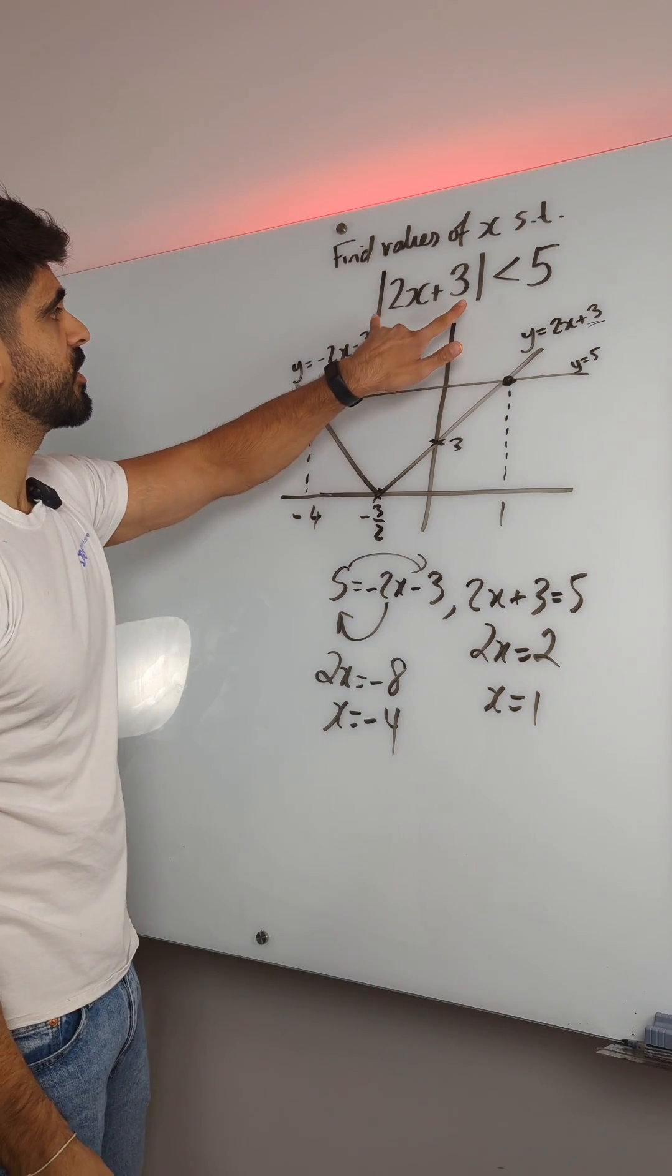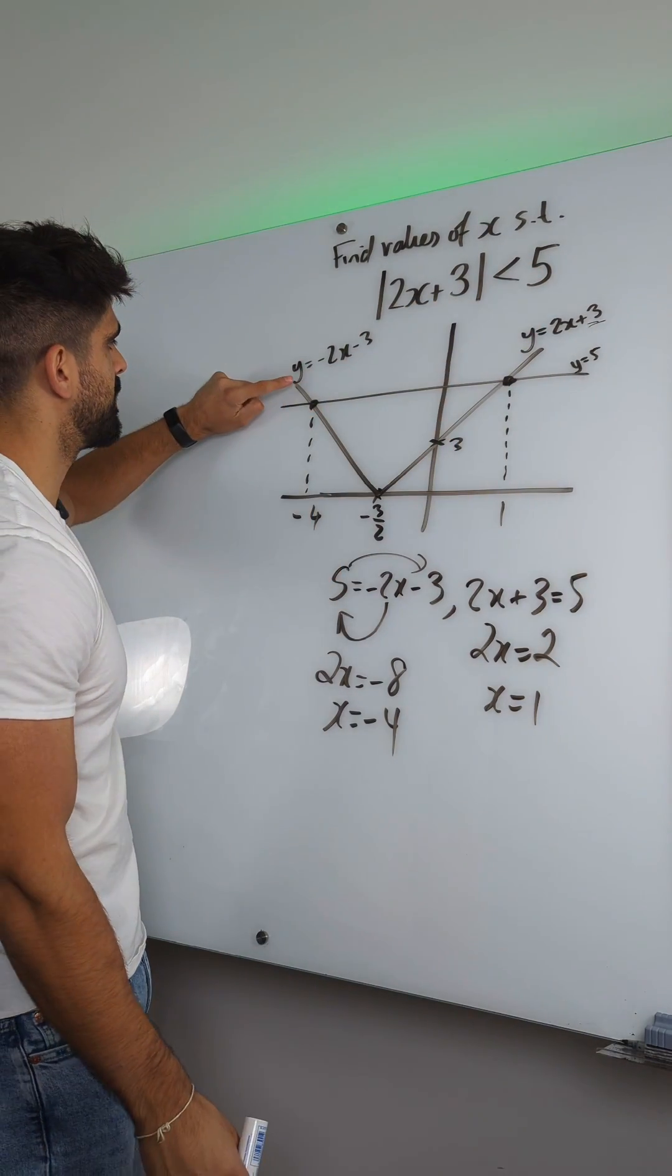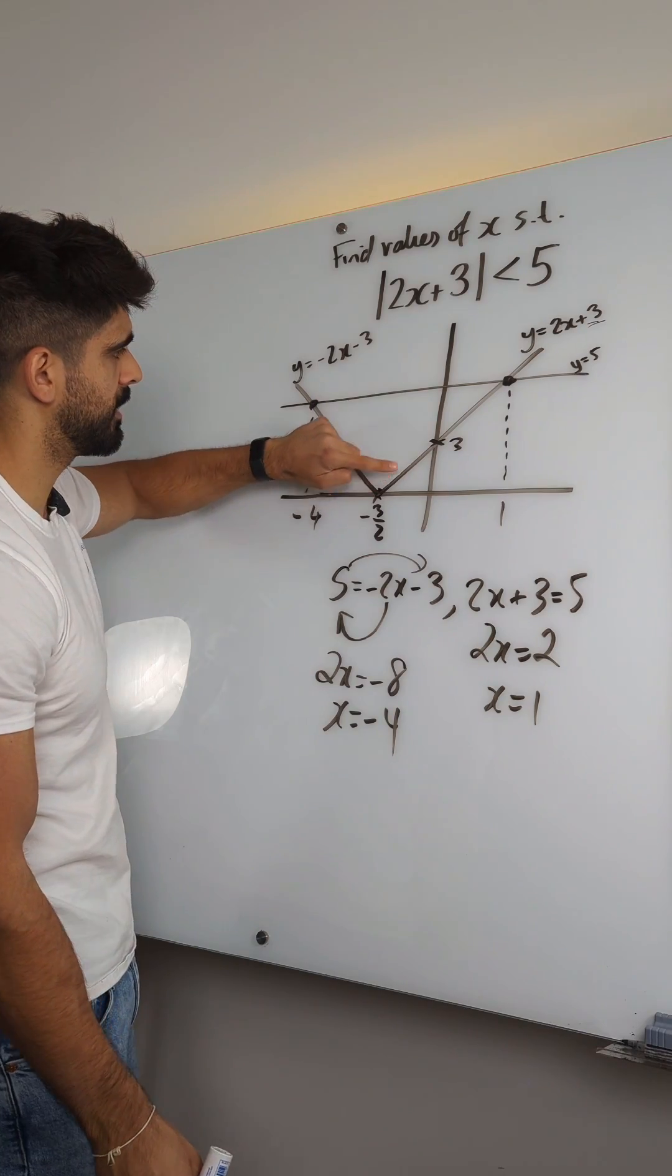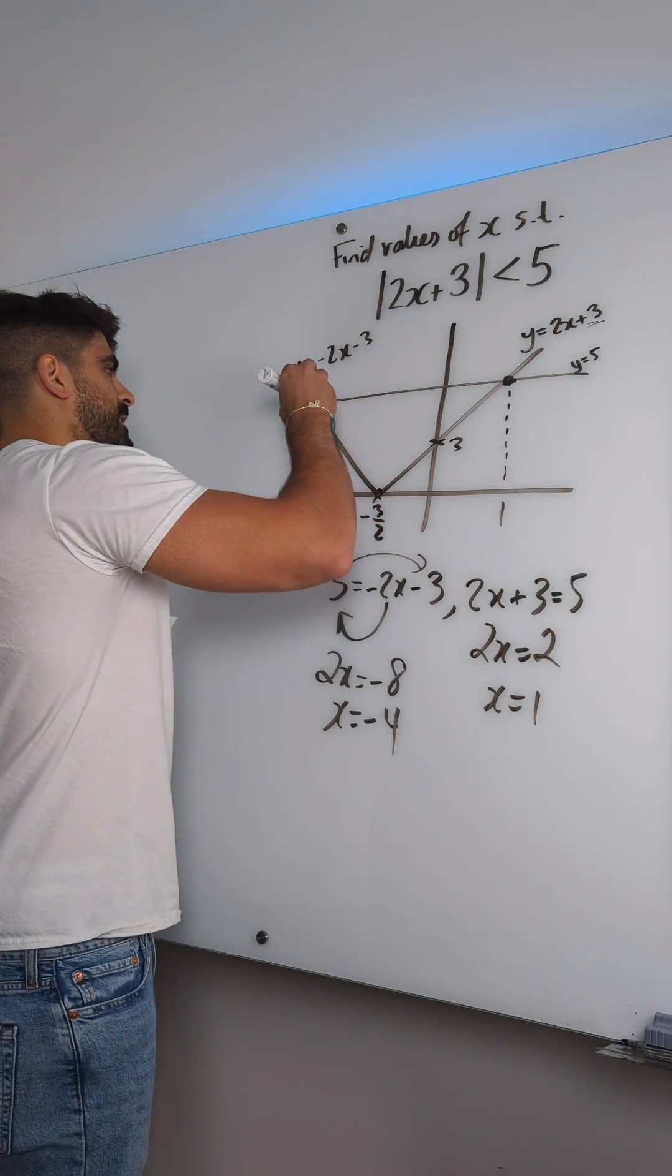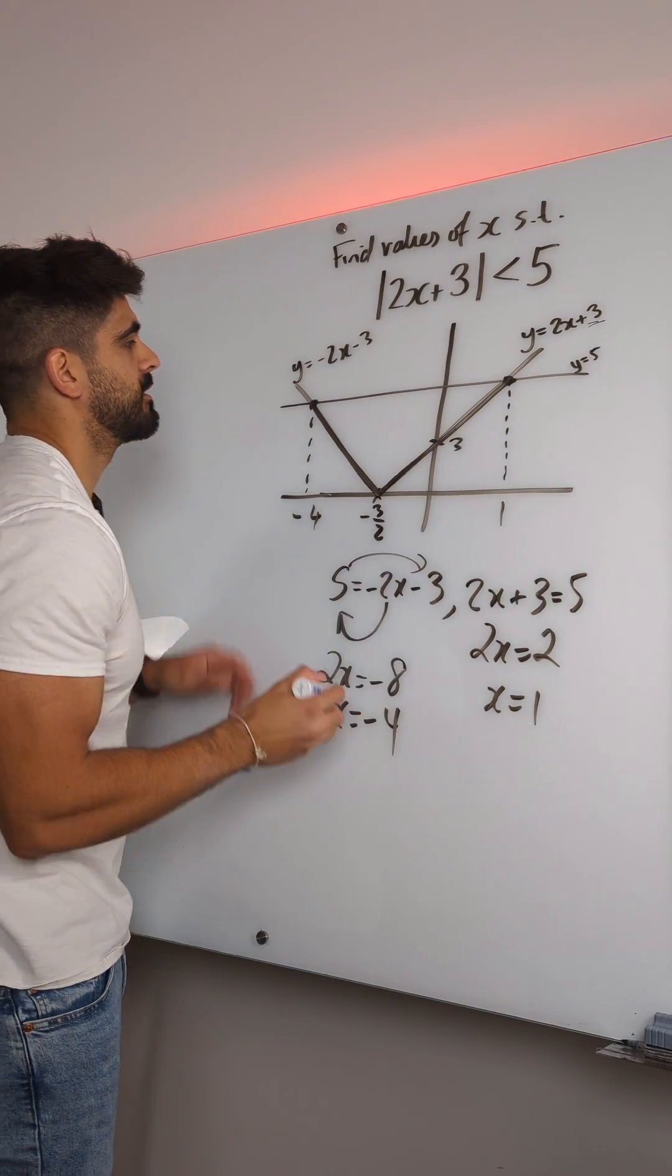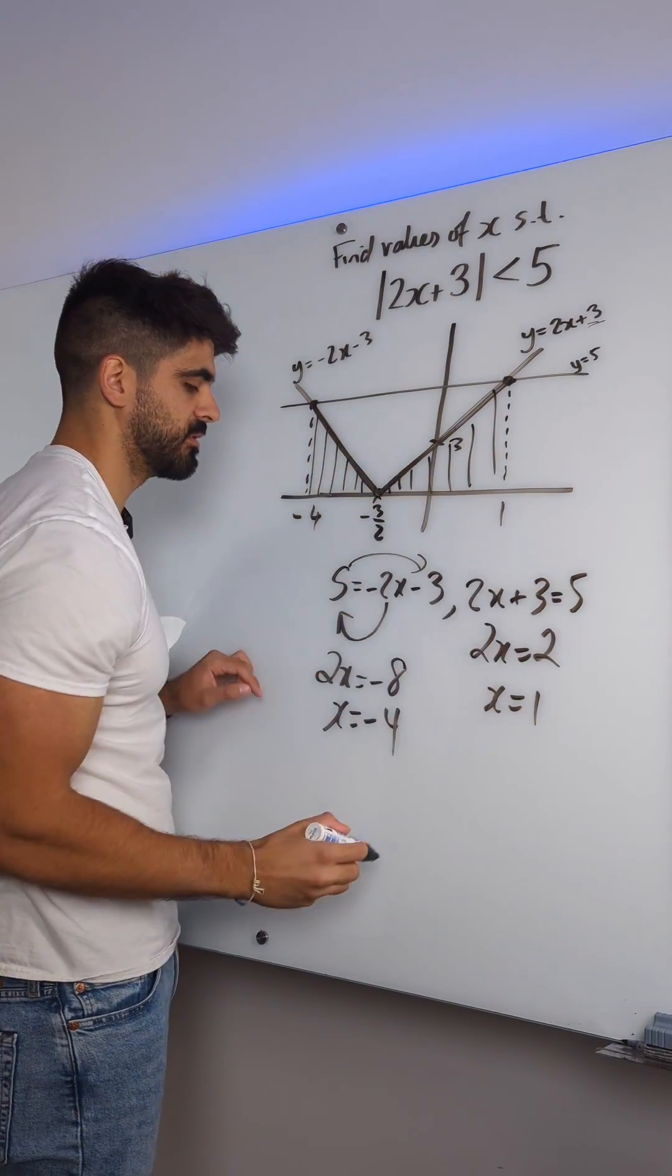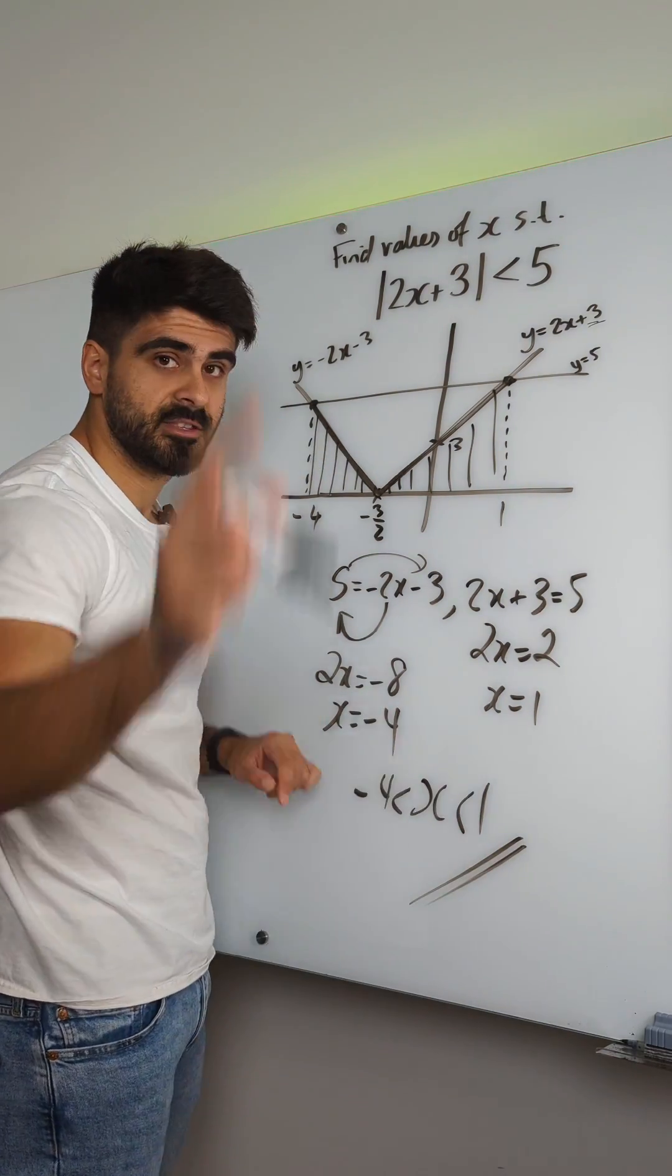It wants to know when is the v below 5. Here's my v. Where do you see it being below 5? Above, above, above, equal, below, below, below, equal, above. So it's this part here, when the v is below the line. Those are these x-values between minus 4 and 1. And it can't equal because of the inequality.